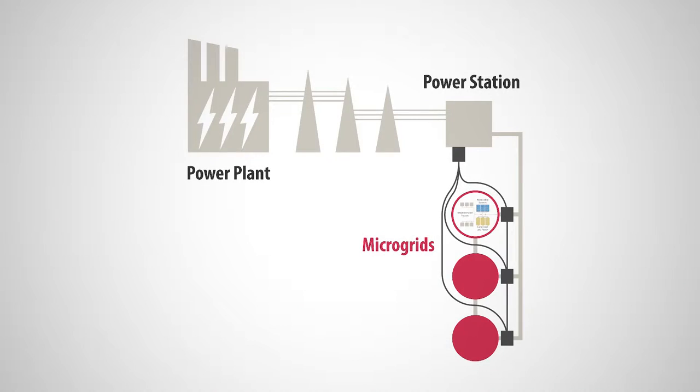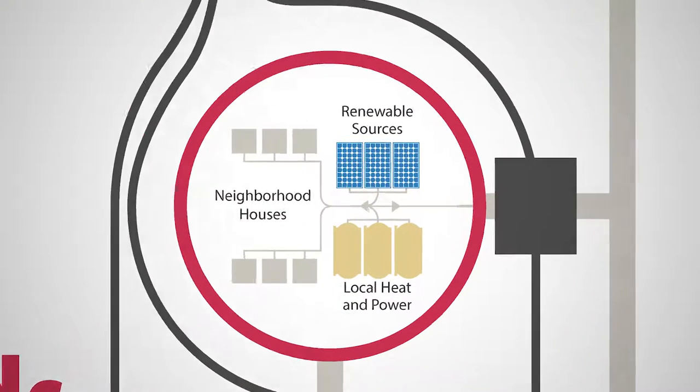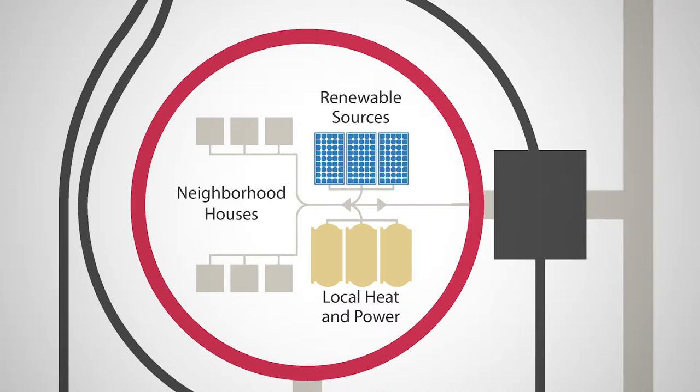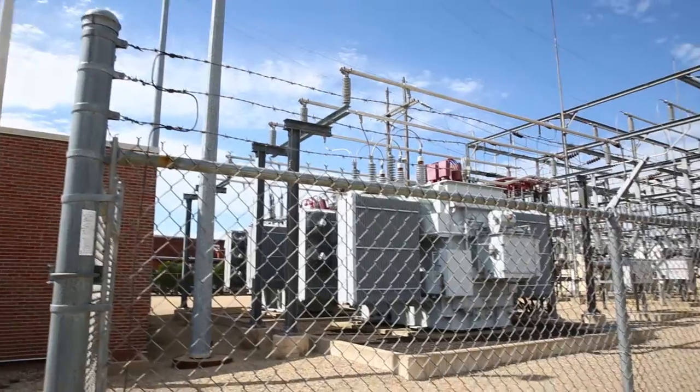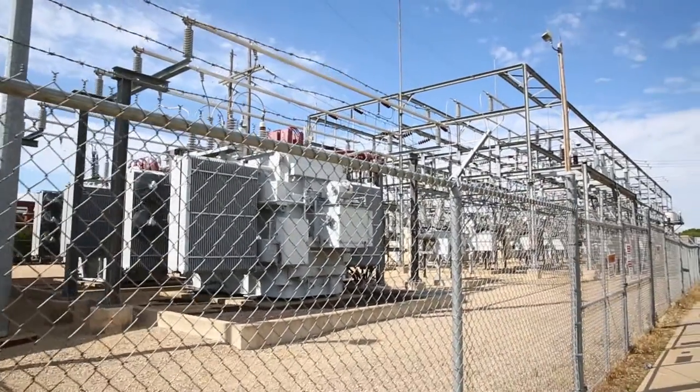A microgrid is a way of powering communities using distributed generation, meaning multiple sources of power, including renewables, working together to balance electrical supply and demand. This is instead of relying on one main utility grid powered by fossil fuel or nuclear energy.